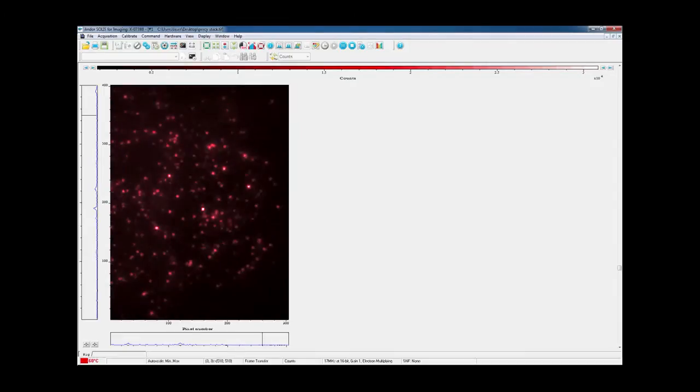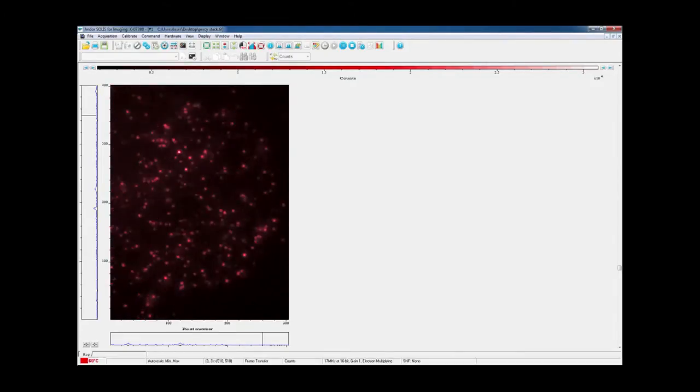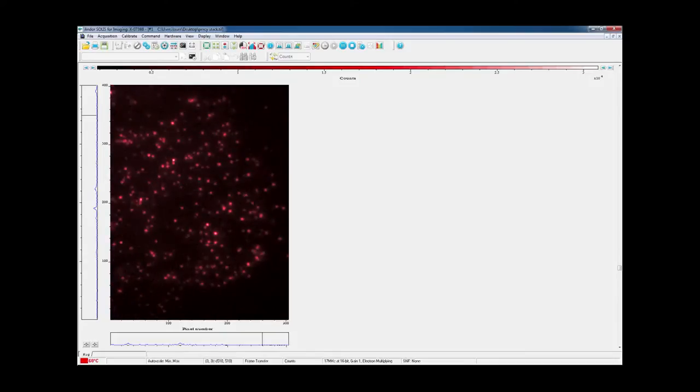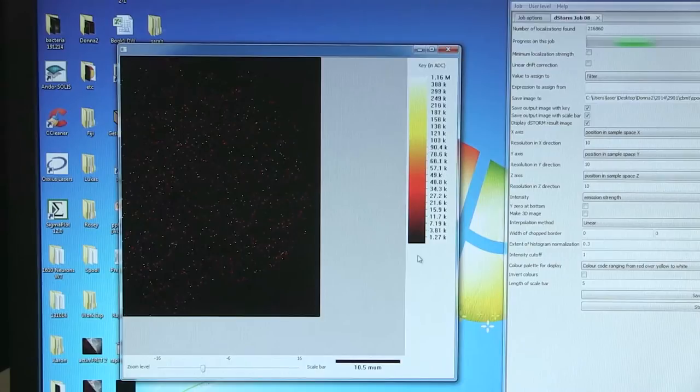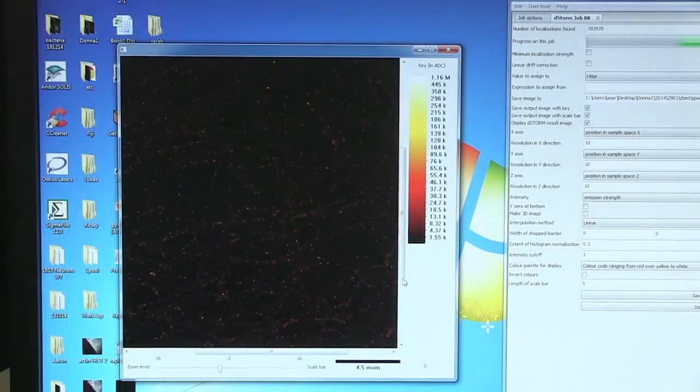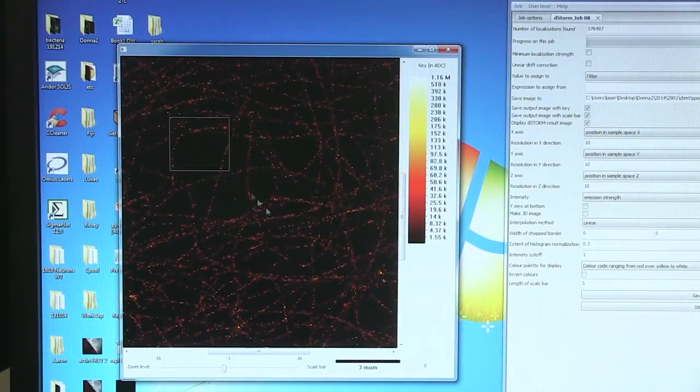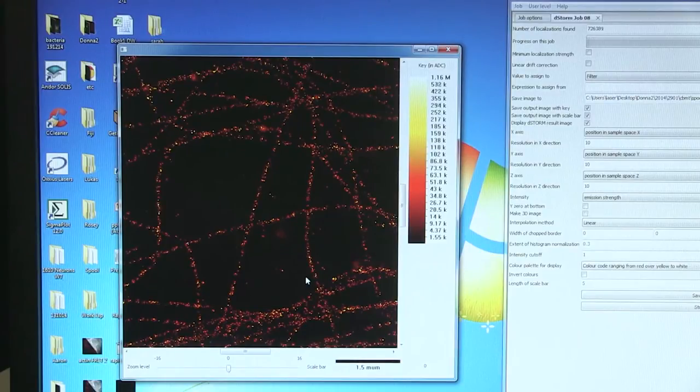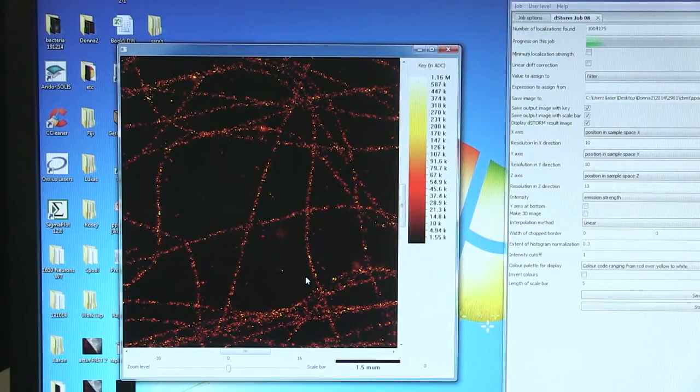You let that run for about 10 to 15,000 frames and then you process that using one of several openly available software suites. So once you've got enough frames we're using RapidStorm and you can just drag your TIFF stack straight in and hit run and that will immediately start to localize these single molecule emissions and plot them onto the final image. In the beginning it's a little bit difficult to see anything but once you zoom in and enough molecules have been localized you start to see microtubules becoming apparent.